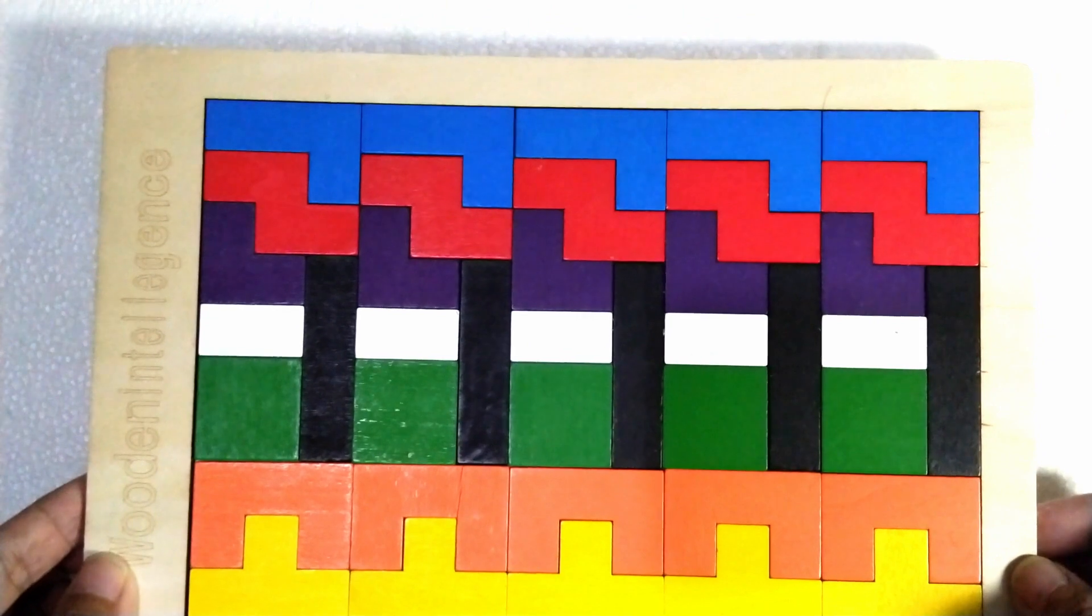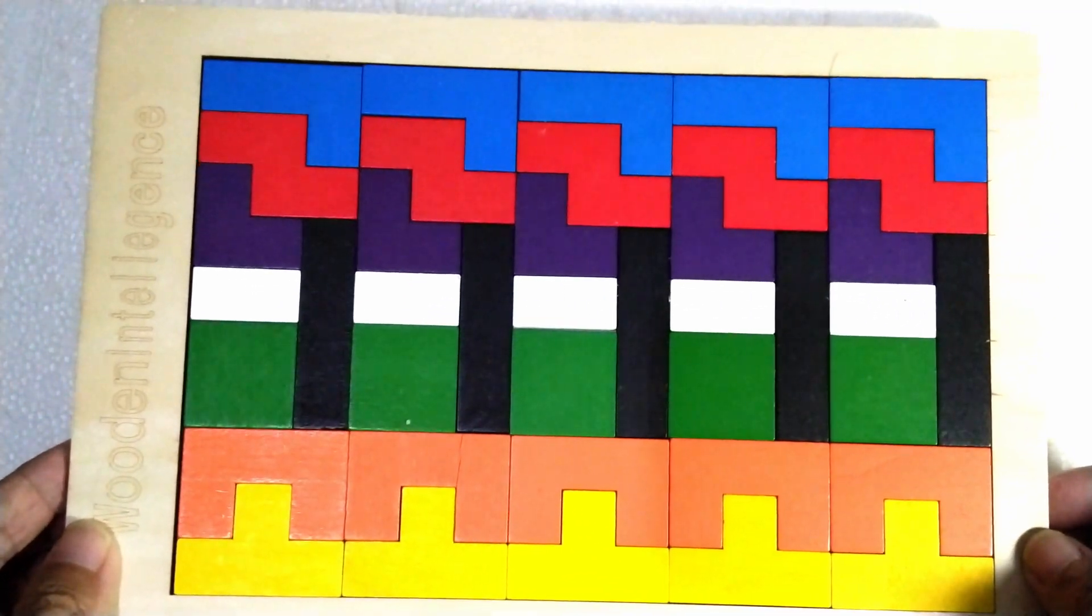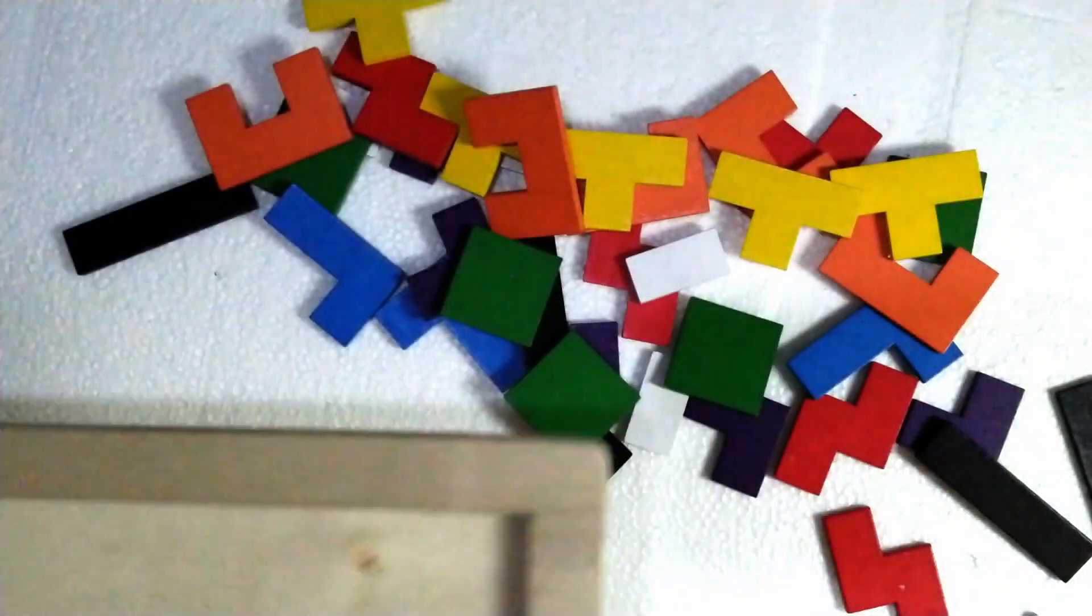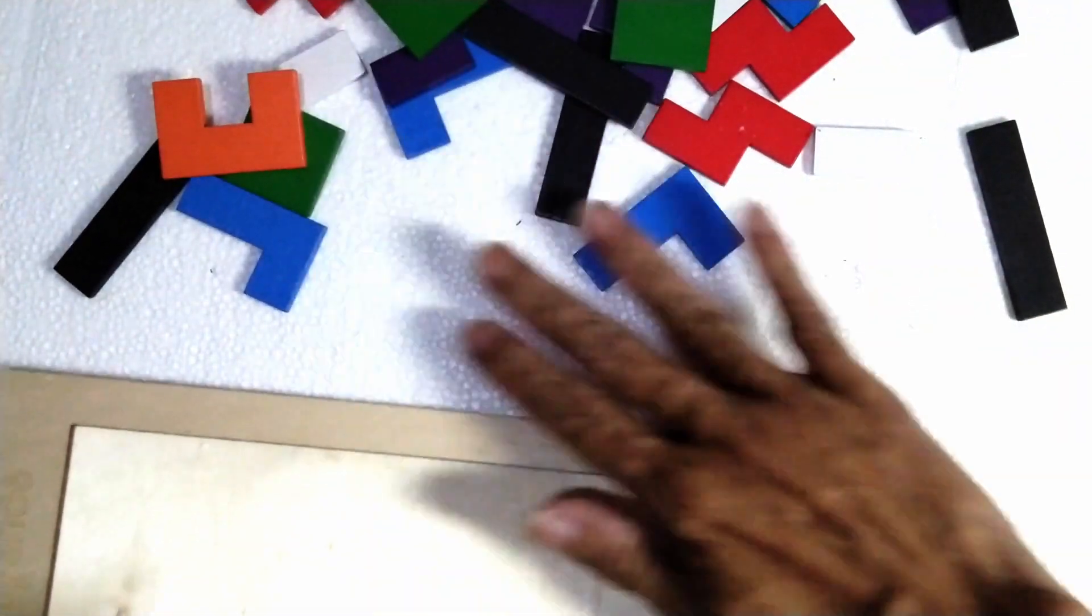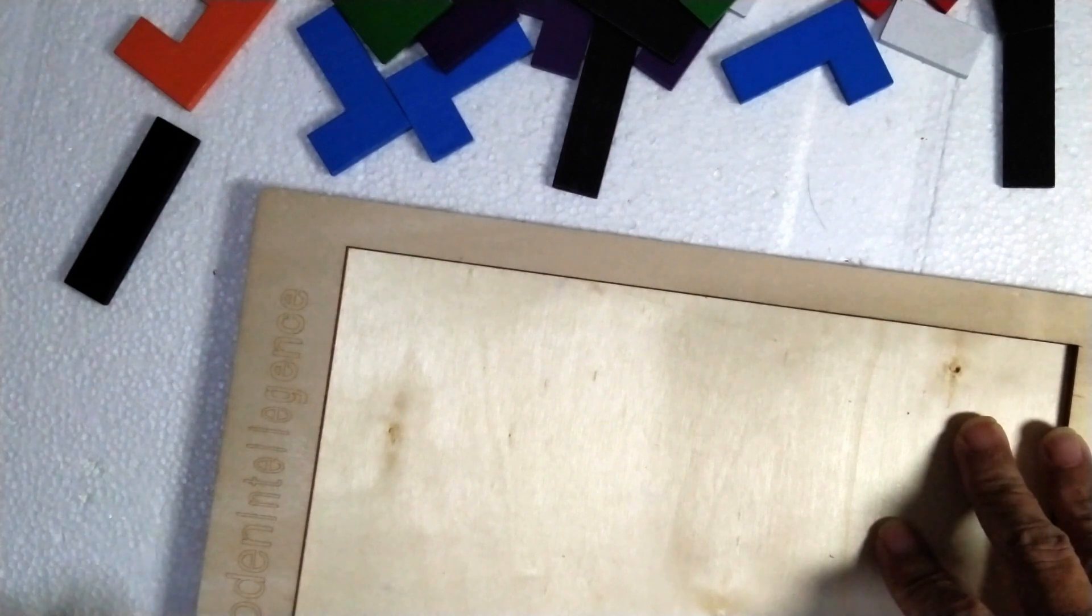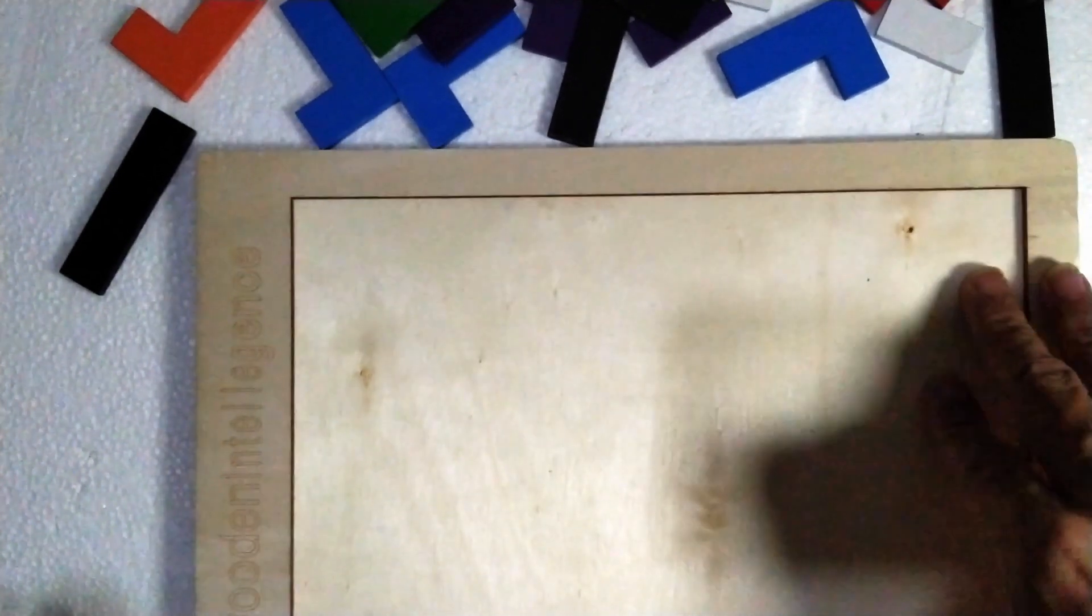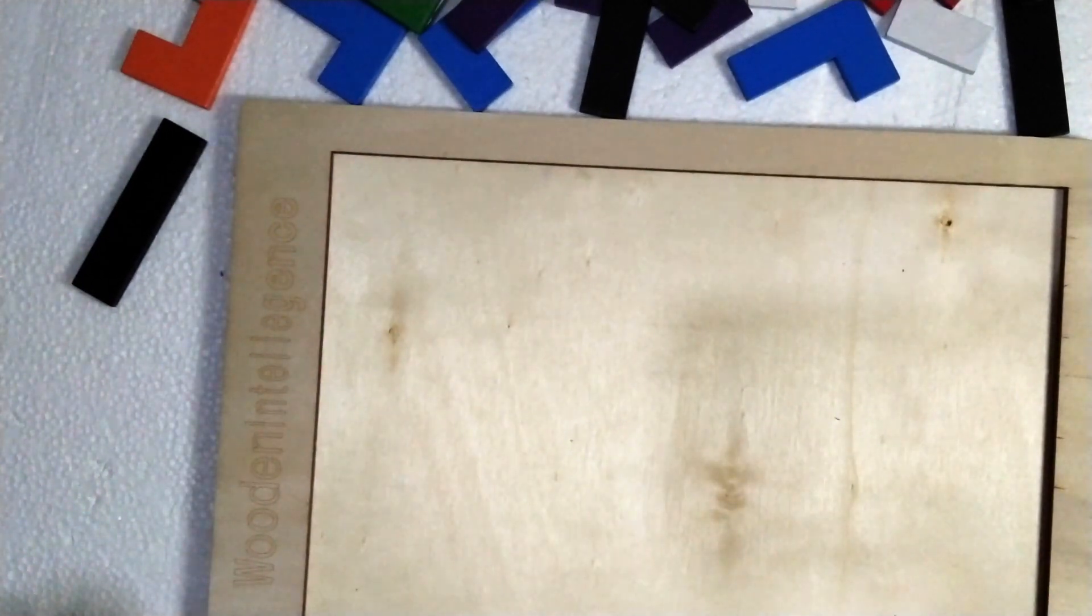Let's start. This is the initial position of the pieces of the wooden intelligent toy and we will pull up this one. Now we will set the B shape model as a reference and we will put the model in this plate.